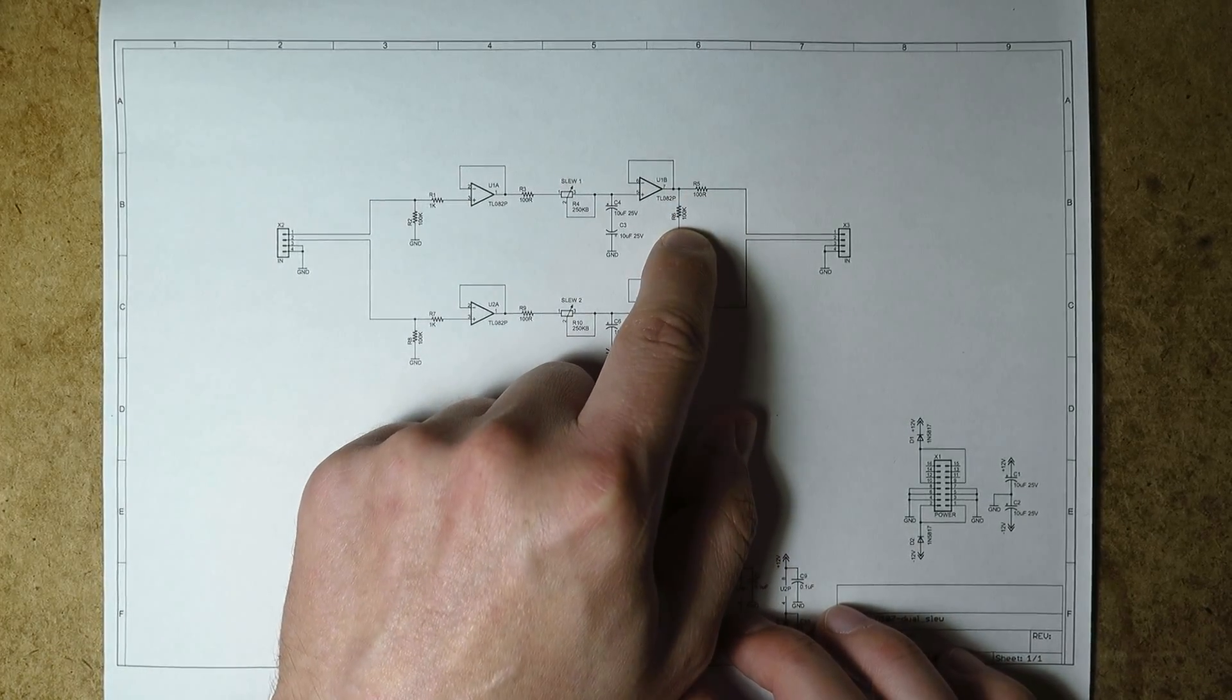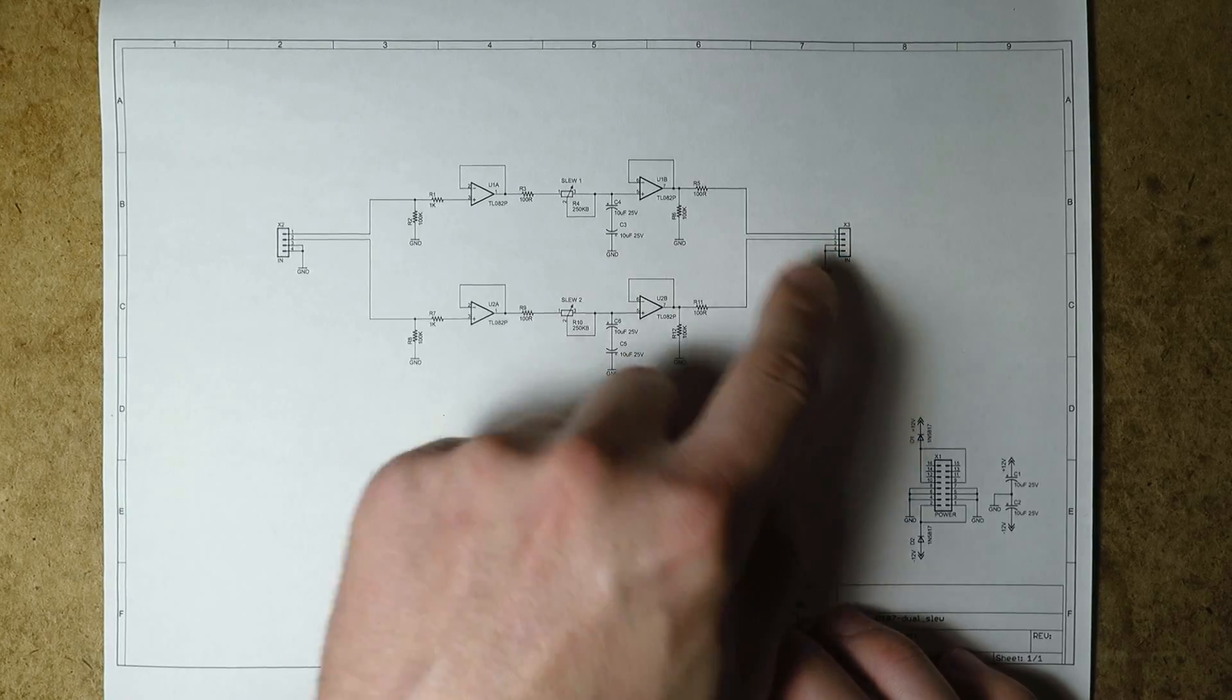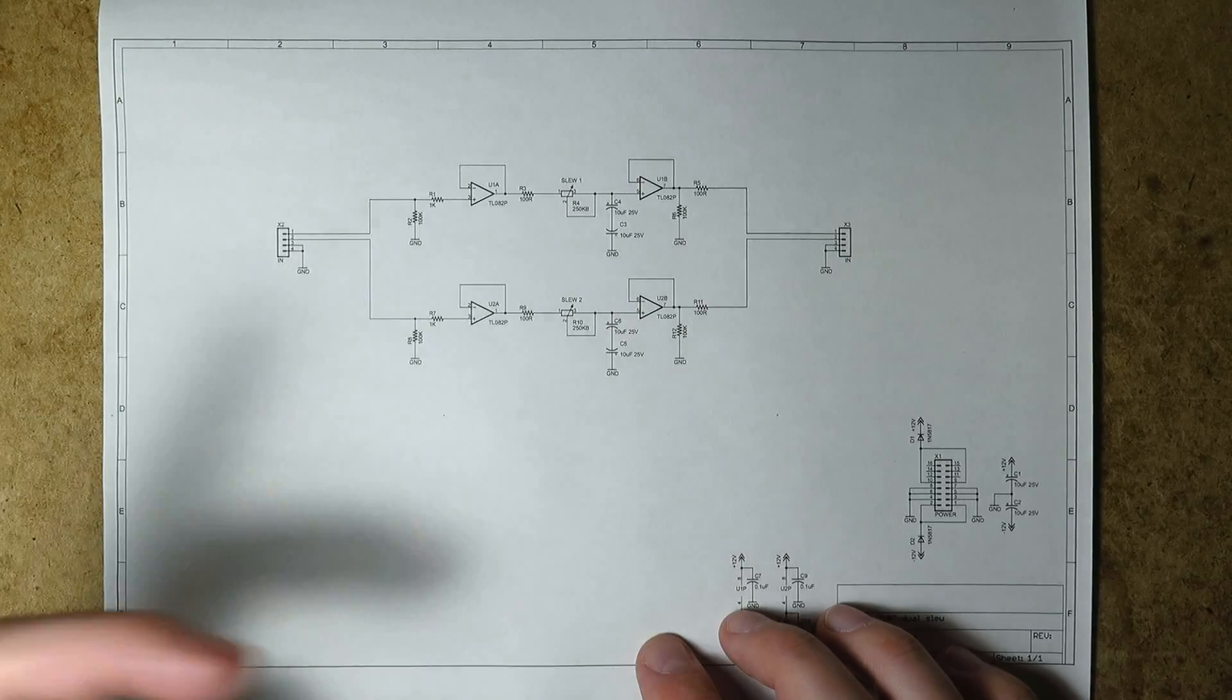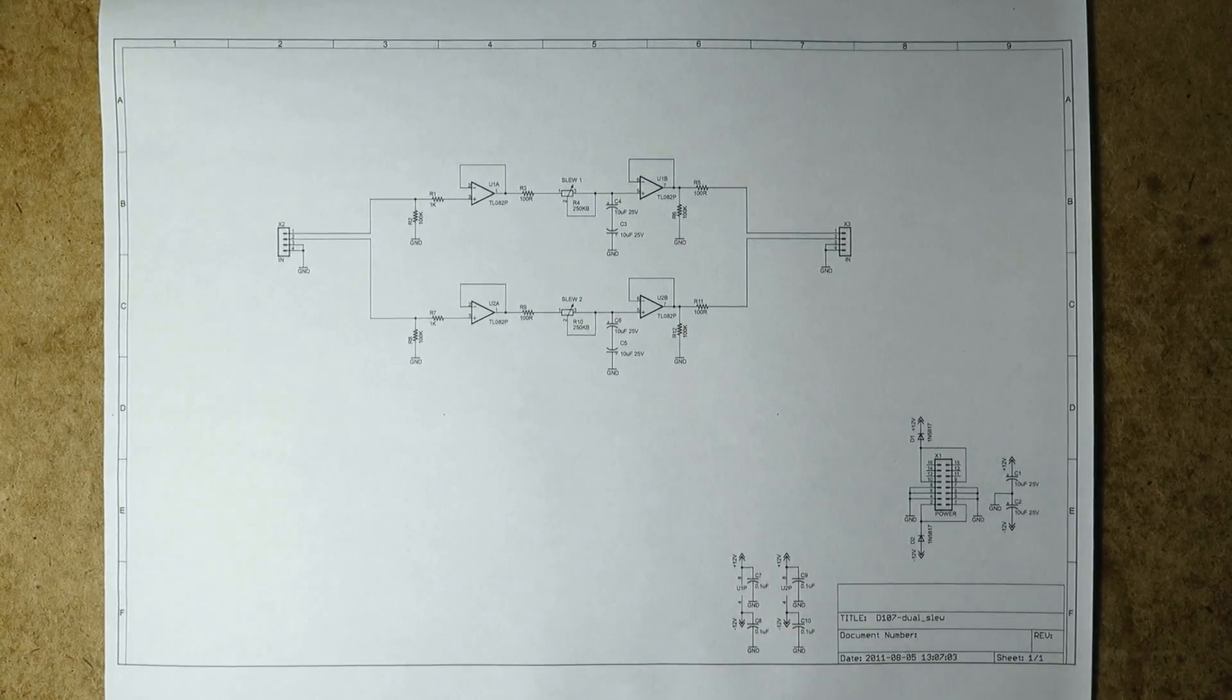And this resistor here, this 100k ohm, just means that when this circuit is off this will be properly terminated to ground. And the second channel is exactly the same as the first channel and it's a really simple circuit.